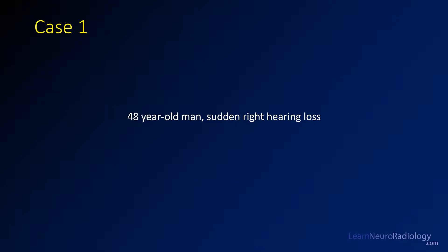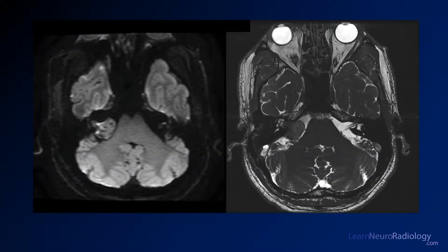For this first case we have a 48-year-old man with sudden right hearing loss. Here are our images. On the left you have a diffusion weighted image. On the right you have a thin slice highly T2 weighted image called FIESTA or CISS. Take a look at that and remember the context of the history.